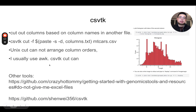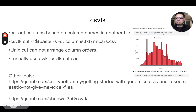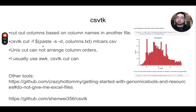Another tool is called CSVTK, closely related to CSVkit. It's also a tool for wrangling CSV files on the command line. This was developed by Shenwei He and is very powerful. For example, you can cut out columns based on column names listed in another file. You can use the command csvtk cut -f and specify the file containing the column names you want to extract.